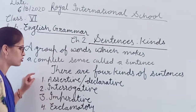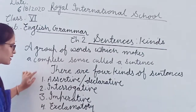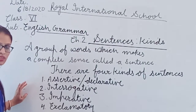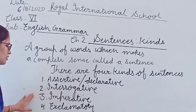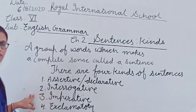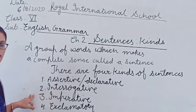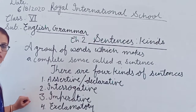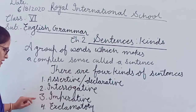Assertive sentences are also called declarative sentences. Interrogative sentences have a question mark. Imperative sentences are those where we are giving a command, requesting someone, or ordering someone. Imperative sentences start with the verb's first form, or with 'please' or 'kindly.'